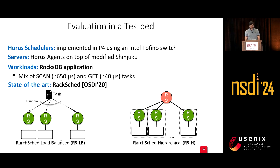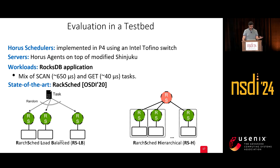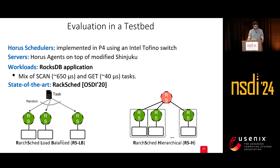We compared our system against the state-of-the-art, RackKit. Since RackKit only works at the rack level and not across the data center, we extended it in two variations. The first is load balancing, where the upper layer is oblivious and simply load-balances traffic across top-of-rack switches, and then RackKit makes the decision. The second is a hierarchical re-implementation of RackKit, where it recursively applies the RackKit logic at spine and top-of-rack switches.